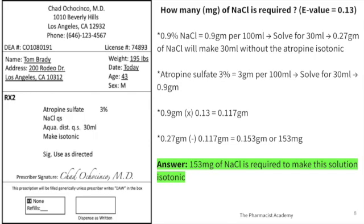Next question: atropine sulfate. Follow the same procedure — first determine how much sodium chloride you'd need with nothing else in the solution. For a plain 30 mL volume, you need 0.27 grams to make it isotonic. But we have atropine sulfate at 3% — that's 3 grams per 100 mL — so for 30 mL you have 0.9 grams of atropine sulfate. Multiply that by the E value of atropine sulfate to get 0.117 grams of sodium chloride equivalence. Subtracting gives 153 milligrams of sodium chloride required to make this solution isotonic.